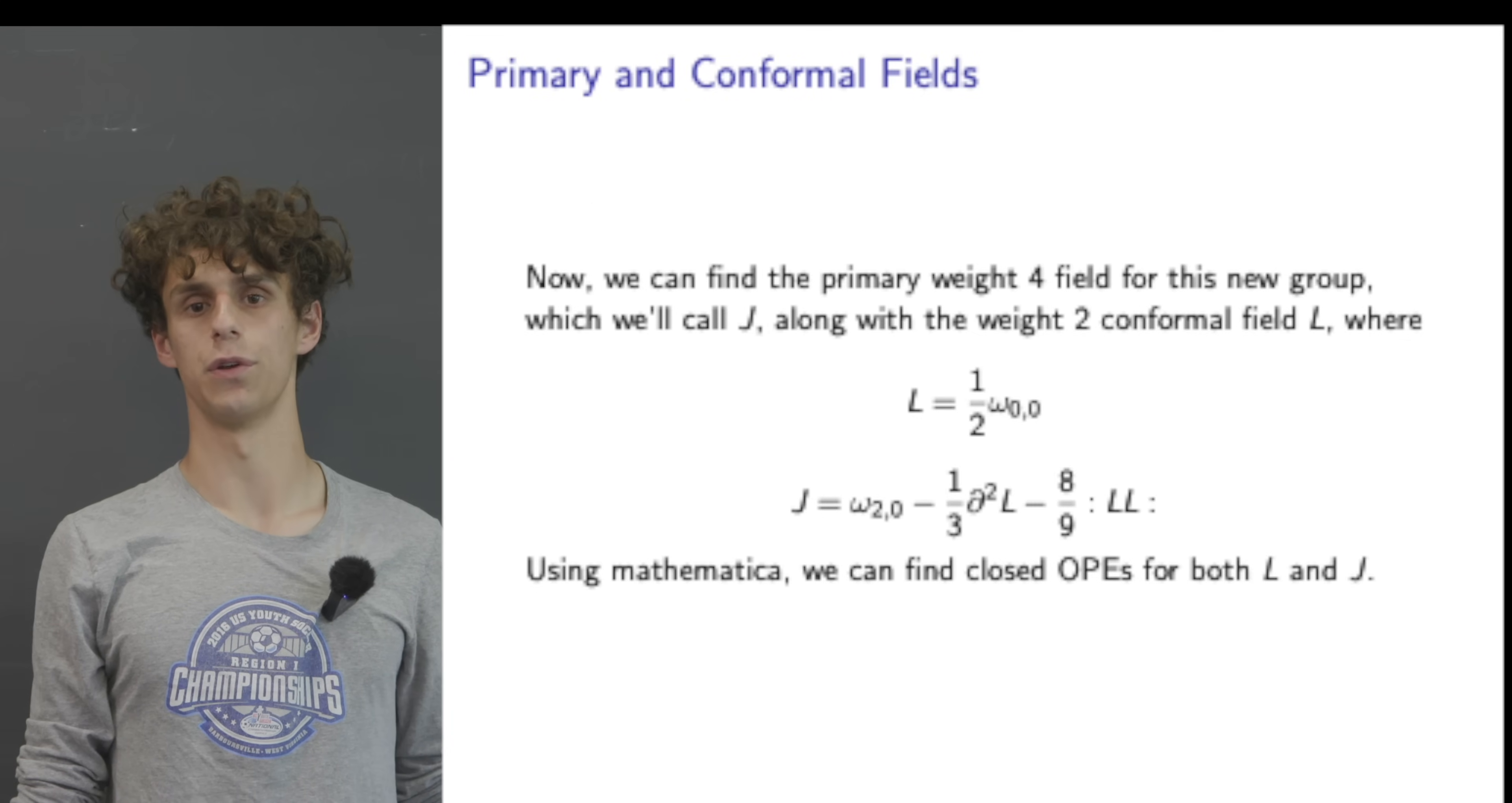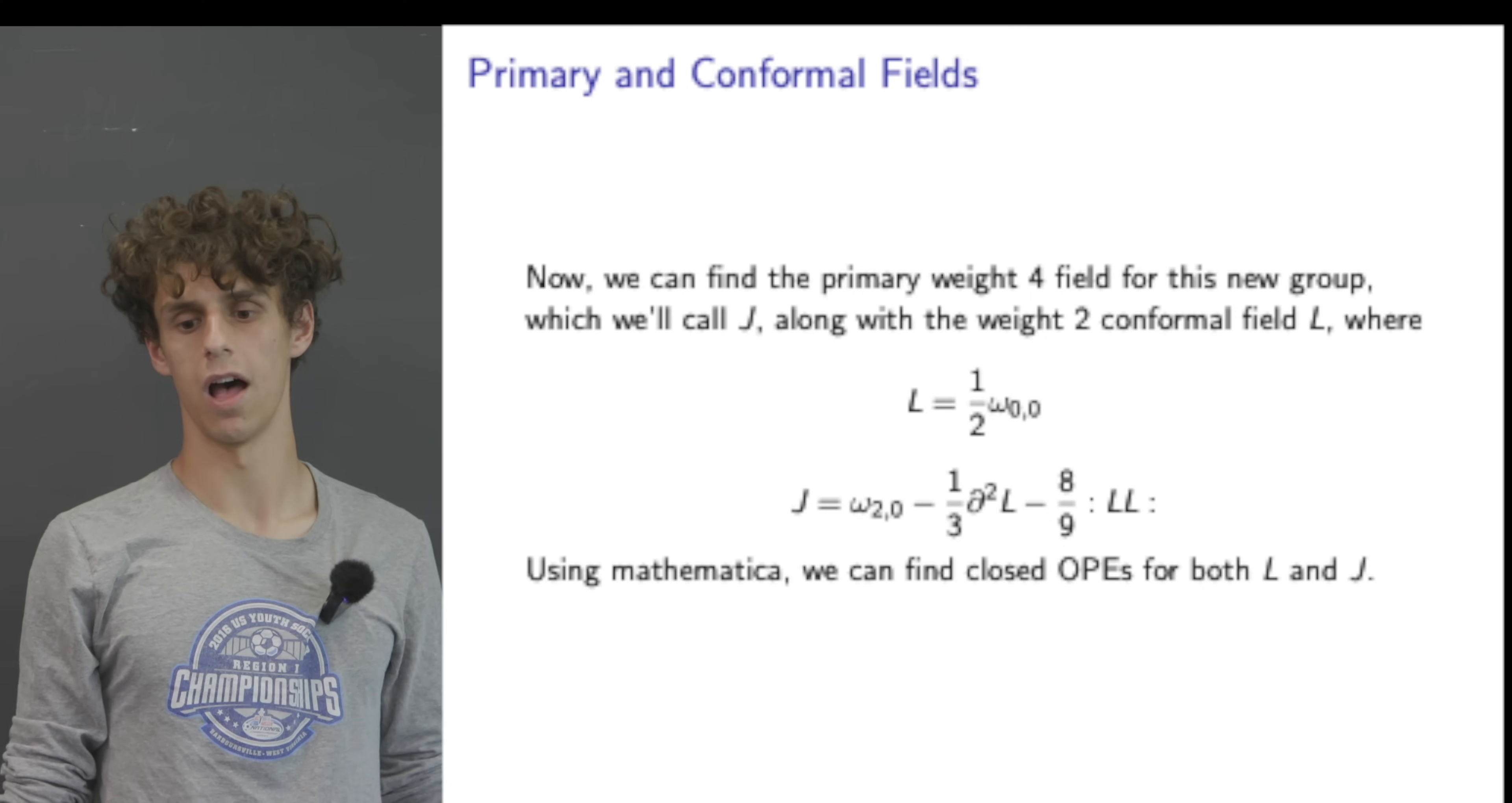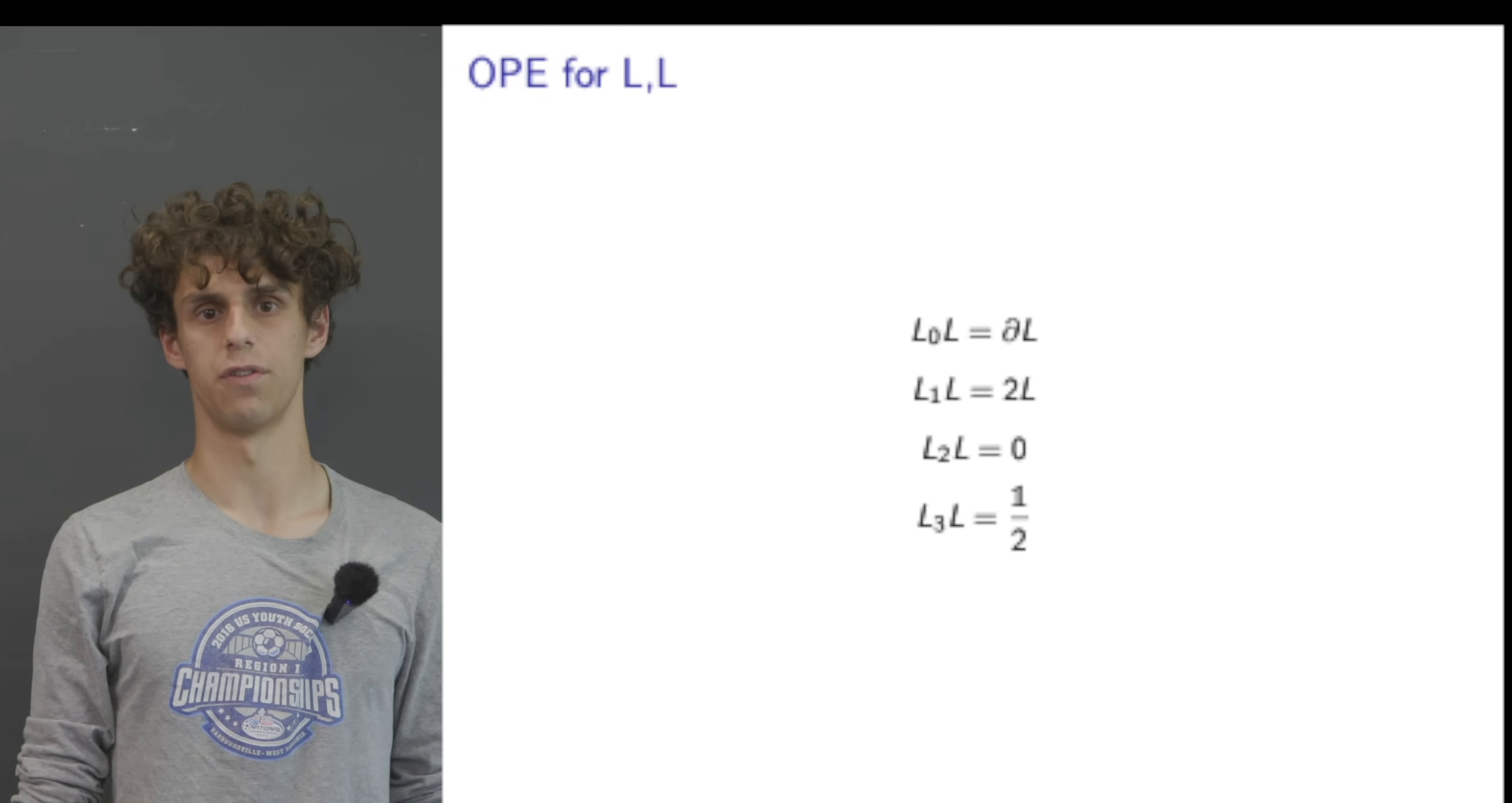Now we can find the primary weight 4 field for this new group which we'll call J along with the weight 2 conformal field L, where L equals one half omega_{0,0} and J equals omega_{2,0} minus one third the second partial of L minus 8 ninths the normally ordered product of L with itself. Using Mathematica we can find closed OPEs for both L and J.